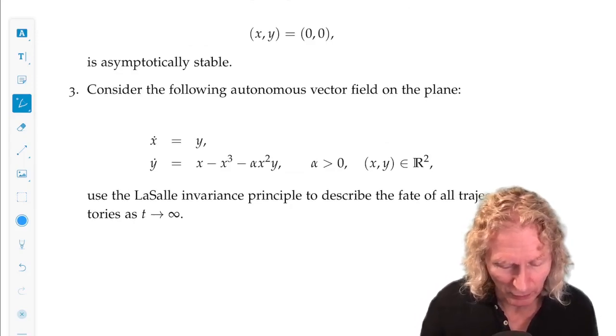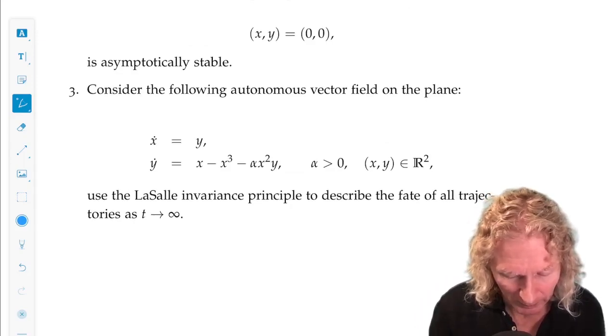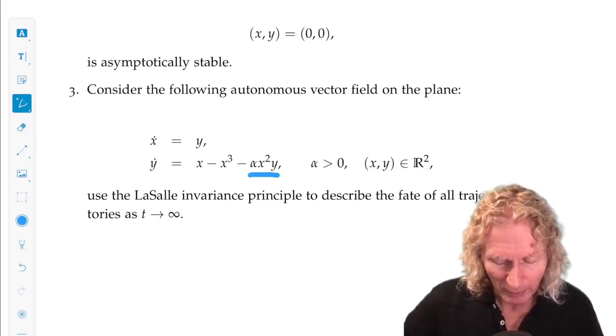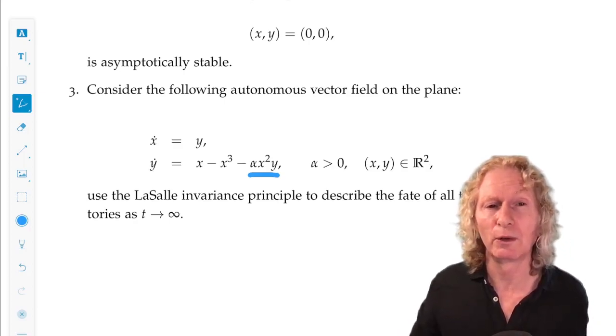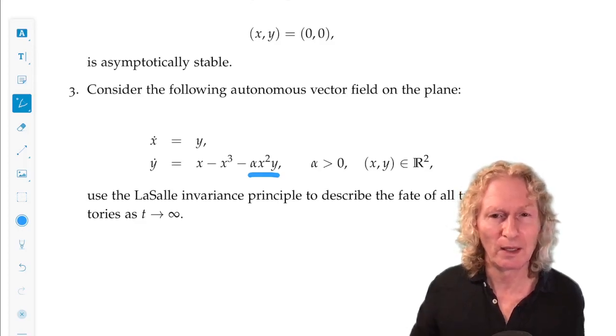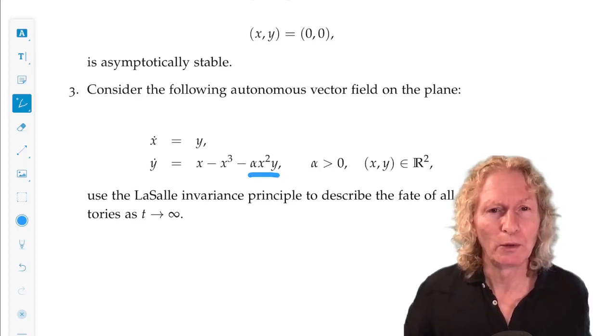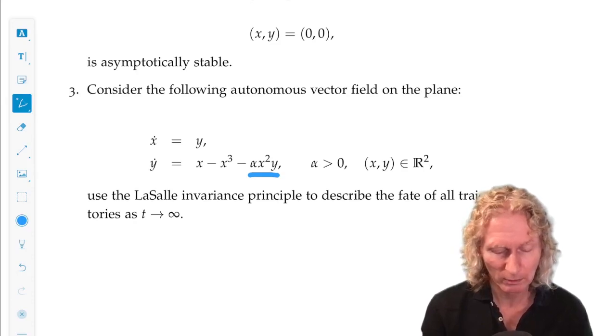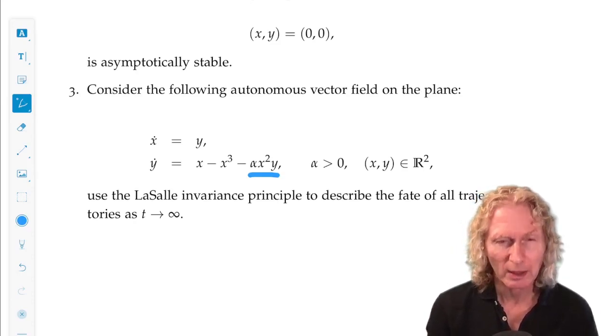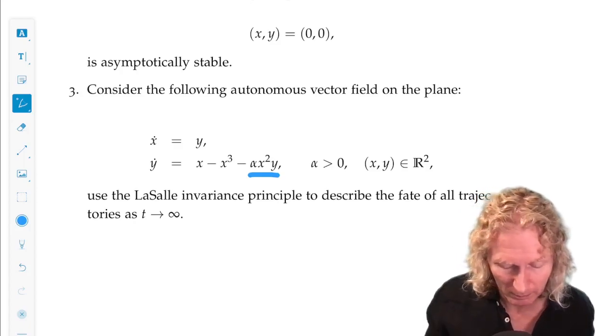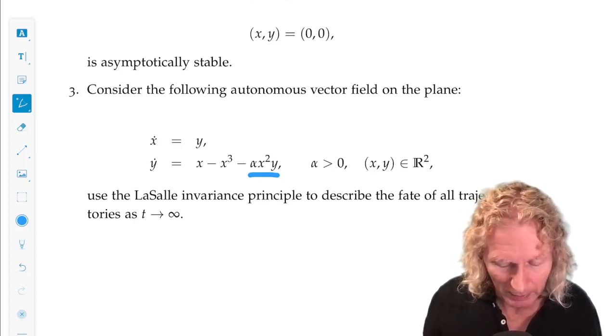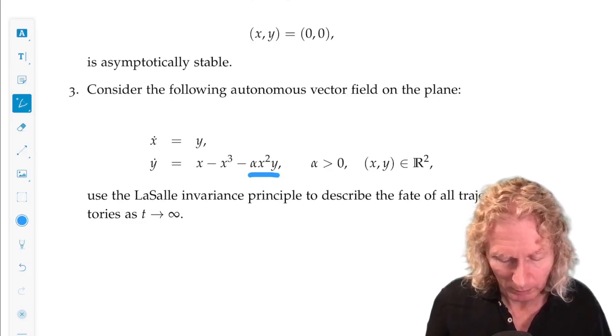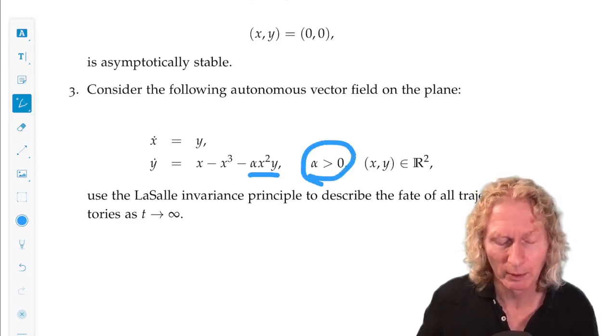All right, you've seen this one before, but now you have a little different term. I want you to use the LaSalle invariance principle to describe the fate of all trajectories as T goes to infinity. You can use the same V of X, Y that we used for the similar example in the chapter and for getting the peanut-shaped positive invariance set. And this gives you an idea about the power of the LaSalle invariance principle. I think we've seen it already, but mind the sign.